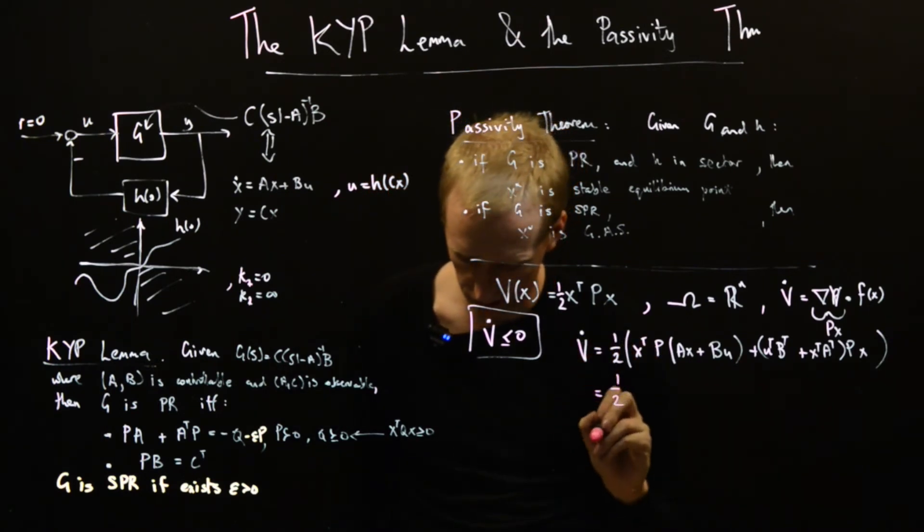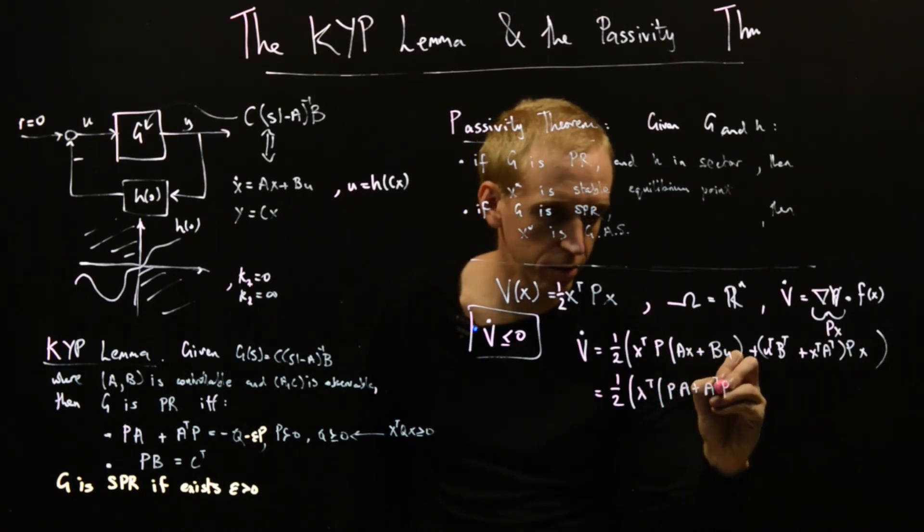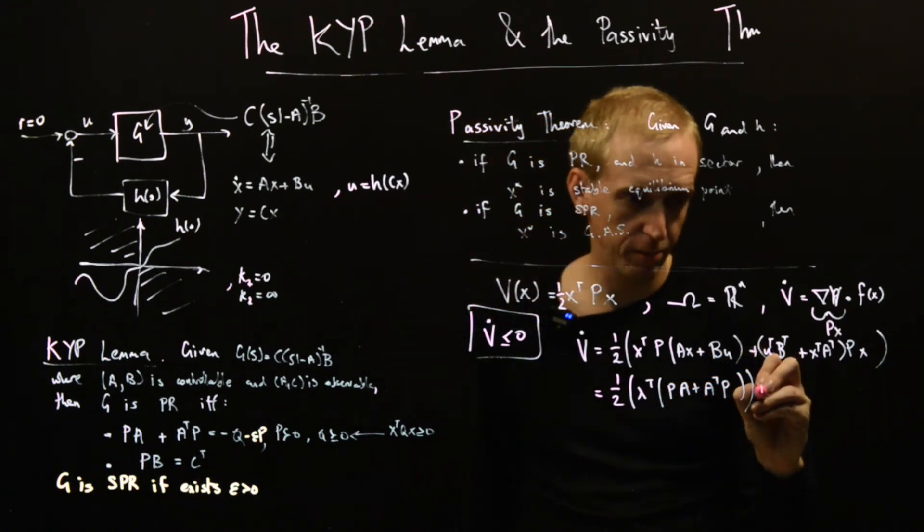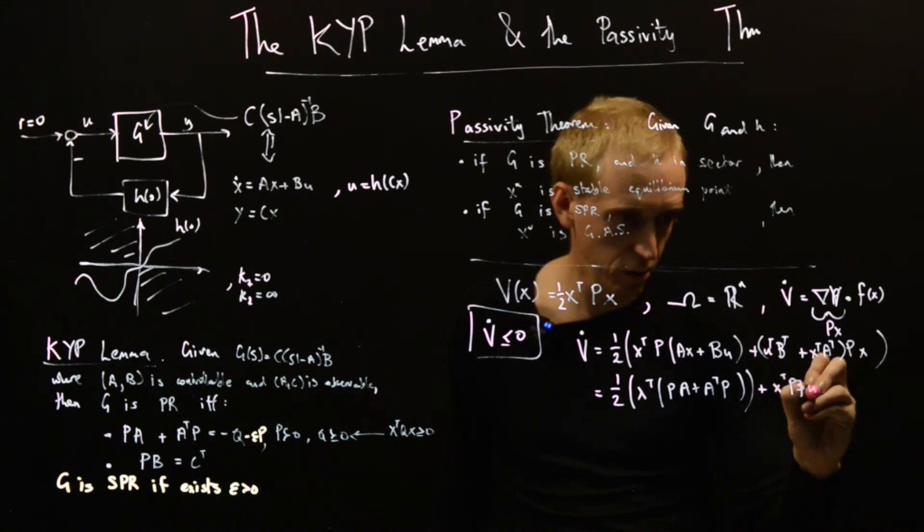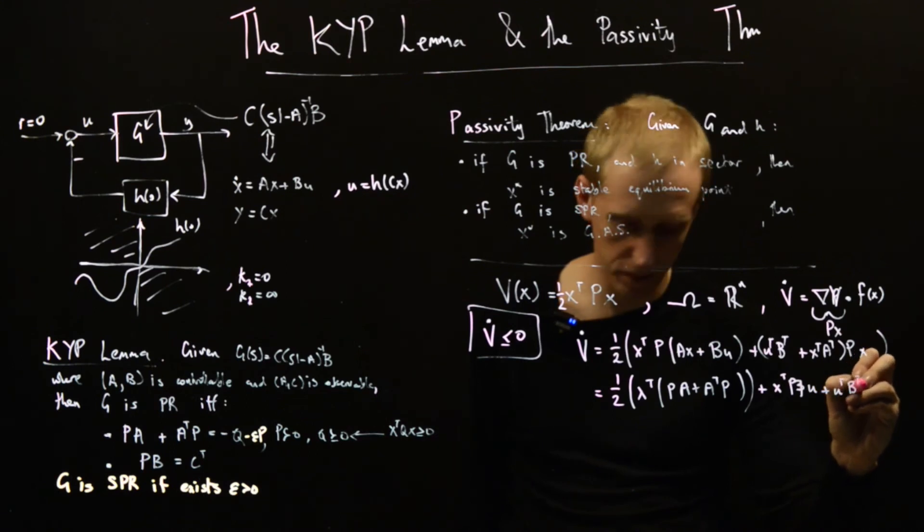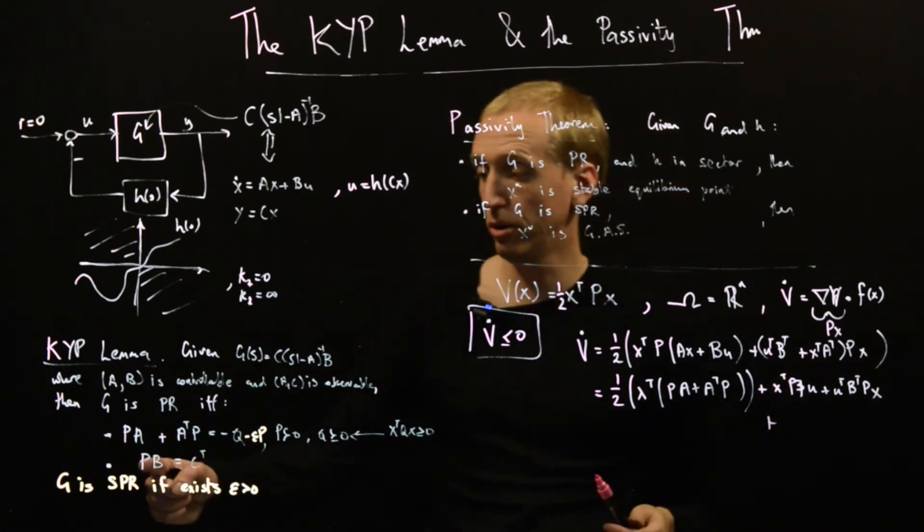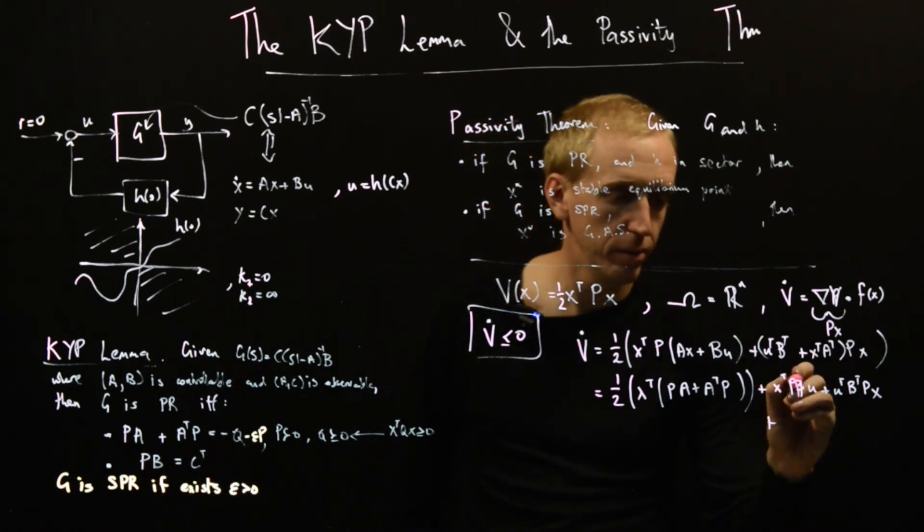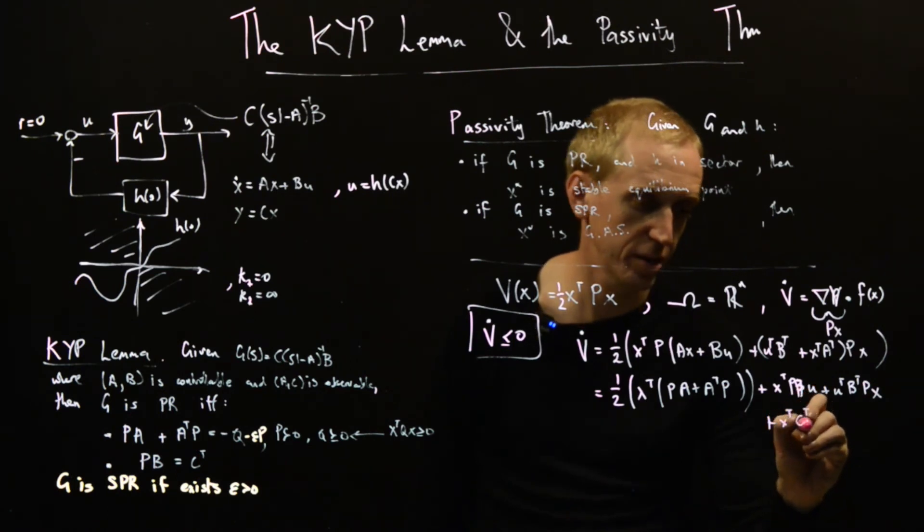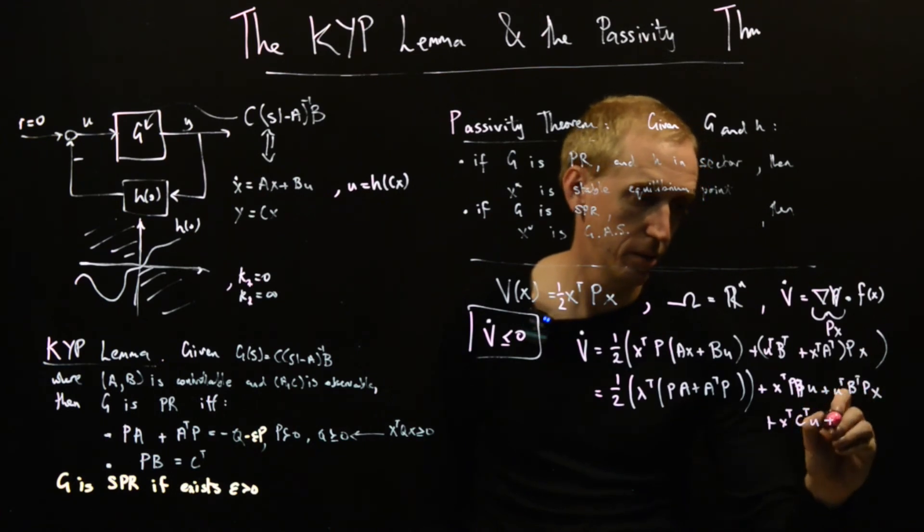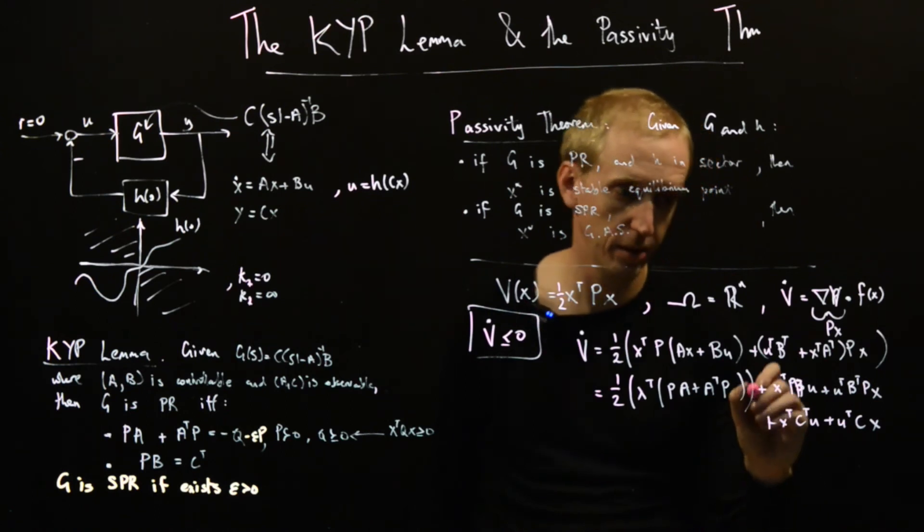We've just substituted in for our dynamics. When we evaluated our dot product, we did a half using this as the transposed piece and we did a half using this as the transposed piece. We just keep simplifying. We get a half, and now I get x transpose P A plus A transpose P, and then plus x transpose P B u plus u transpose B transpose P x. What does this equal? This is where I use my second equation. I see that P B is equal to C transpose, so this is x transpose C transpose u, and this is plus u transpose C x.